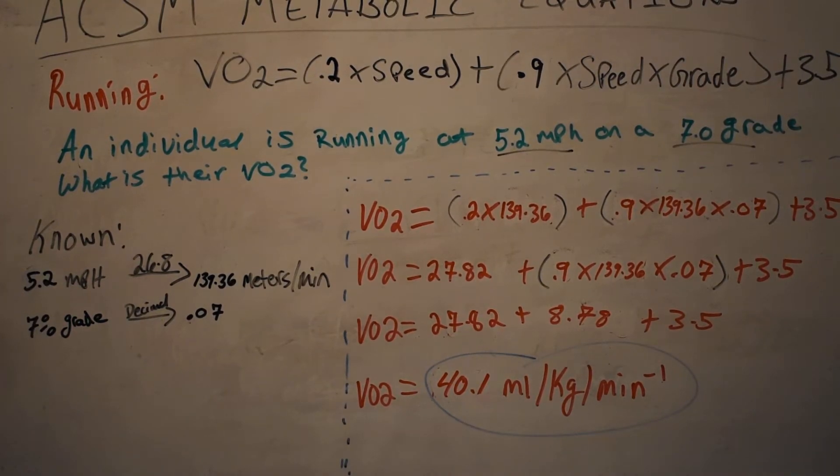So right away the first thing I'm going to do is convert my miles per hour into meters per minute. So I take 5.2, multiply that by 26.8, and that gives me 139.36 meters per minute.